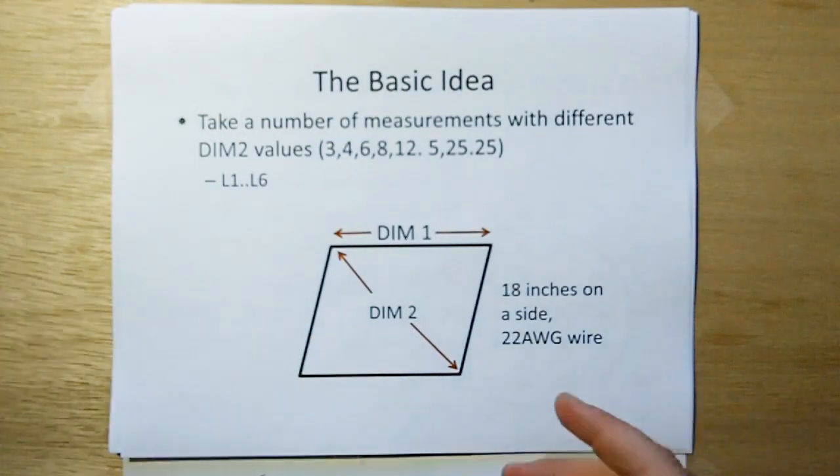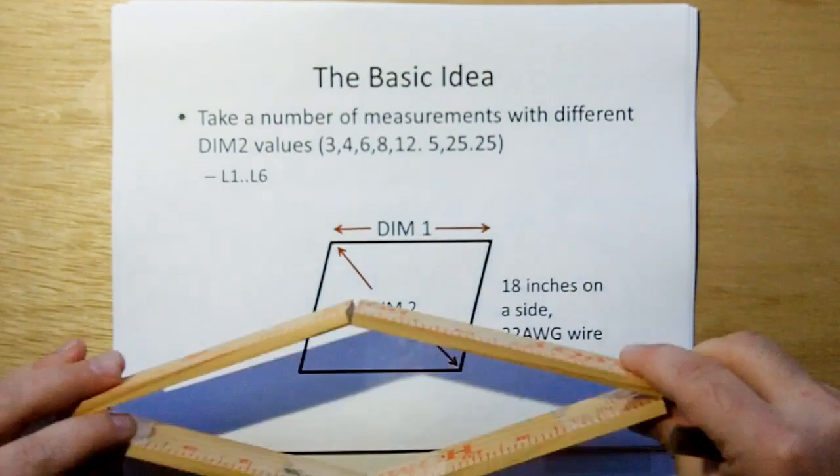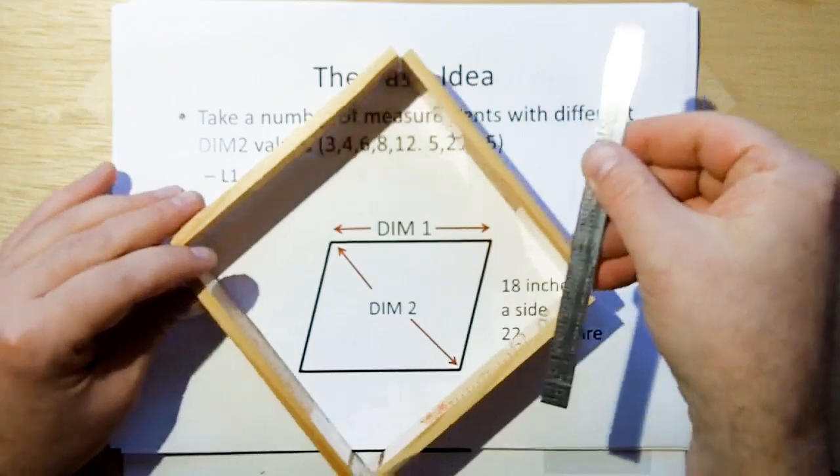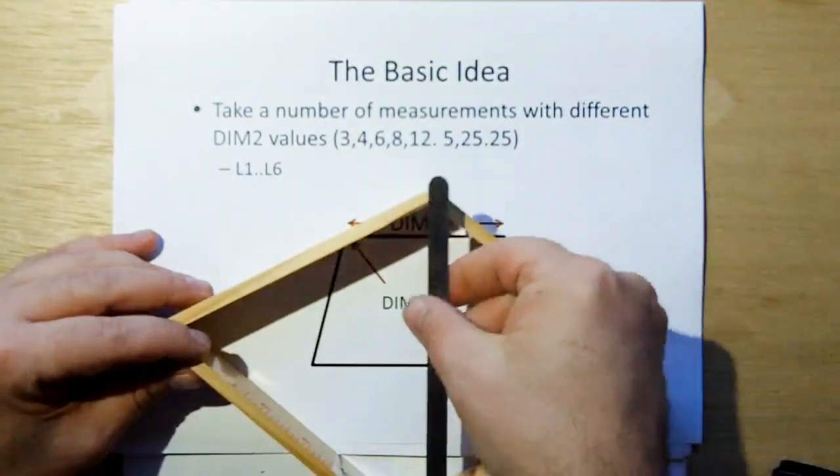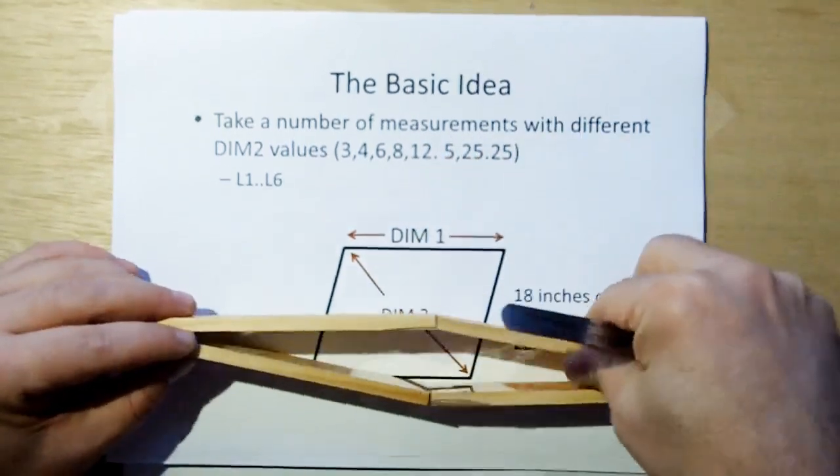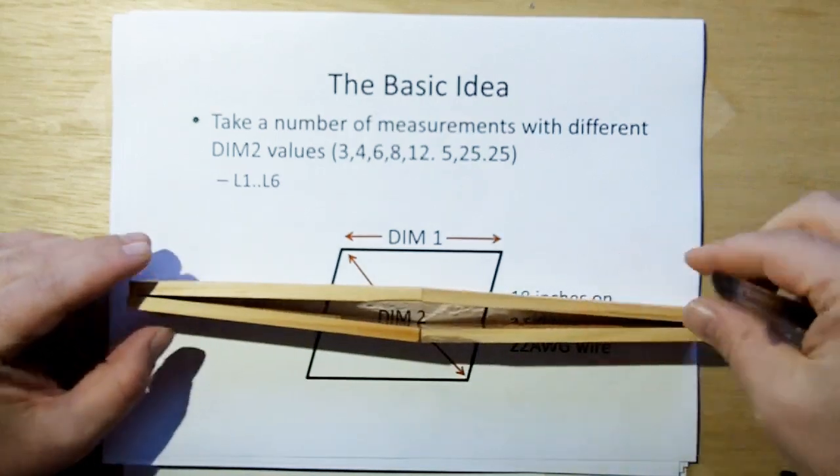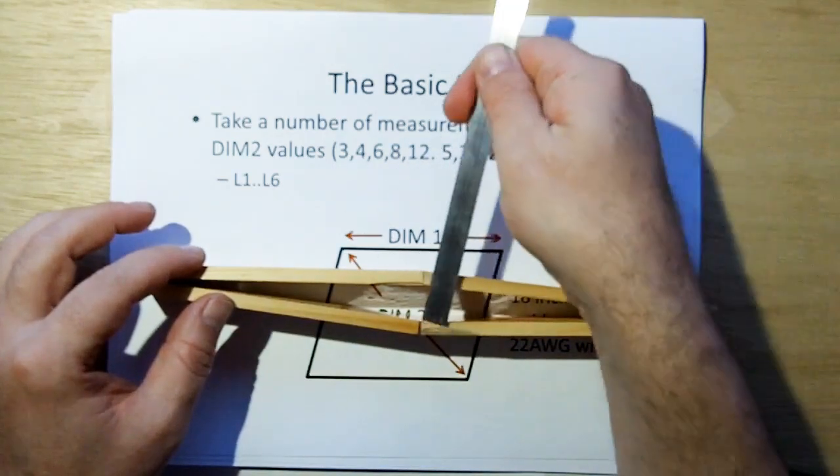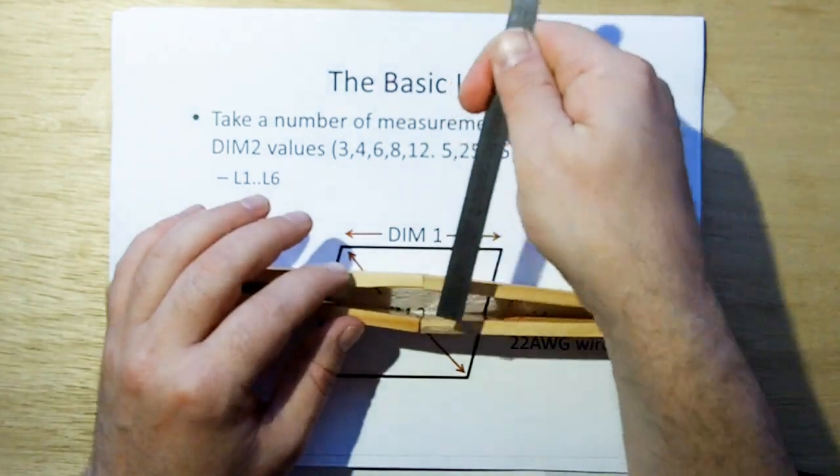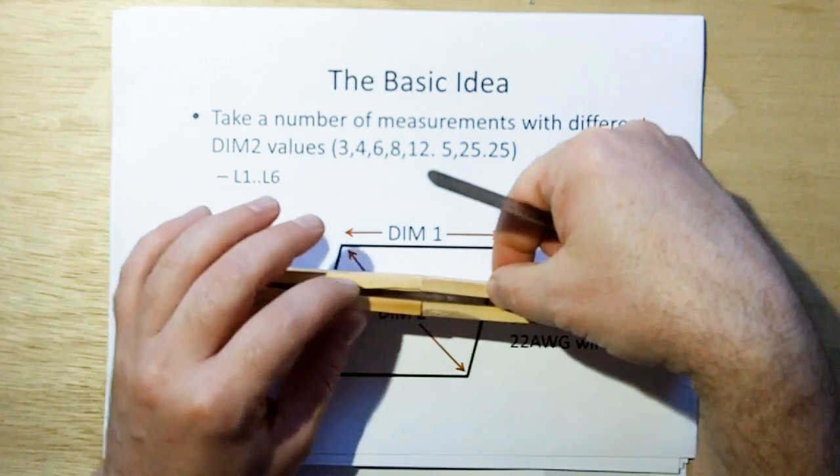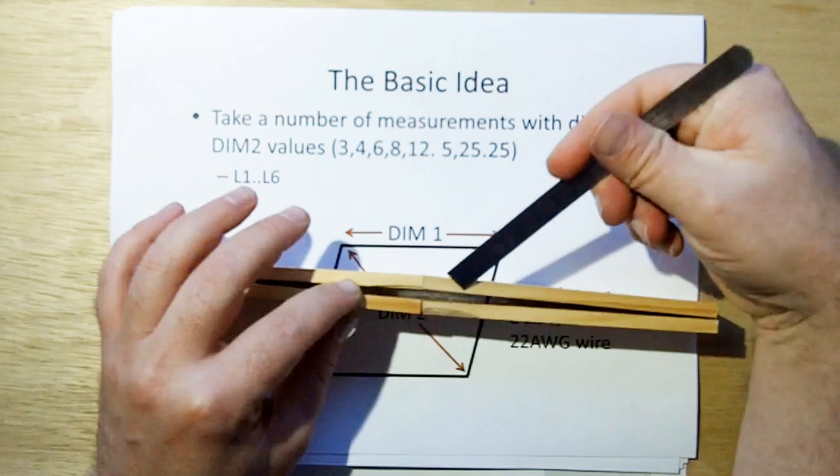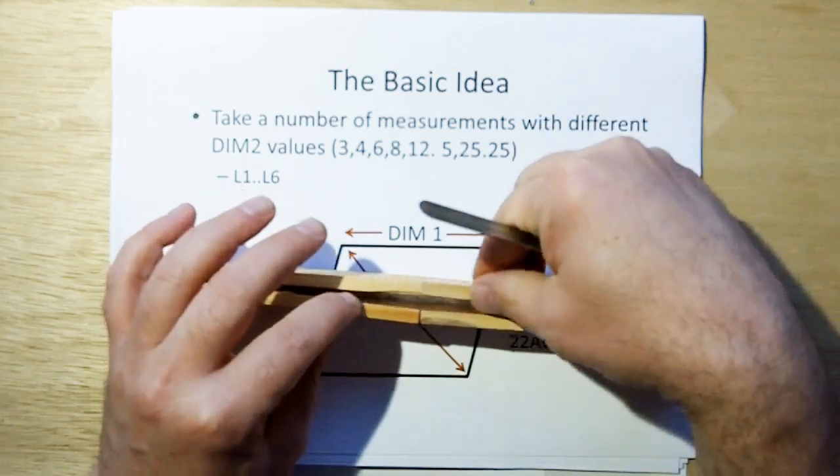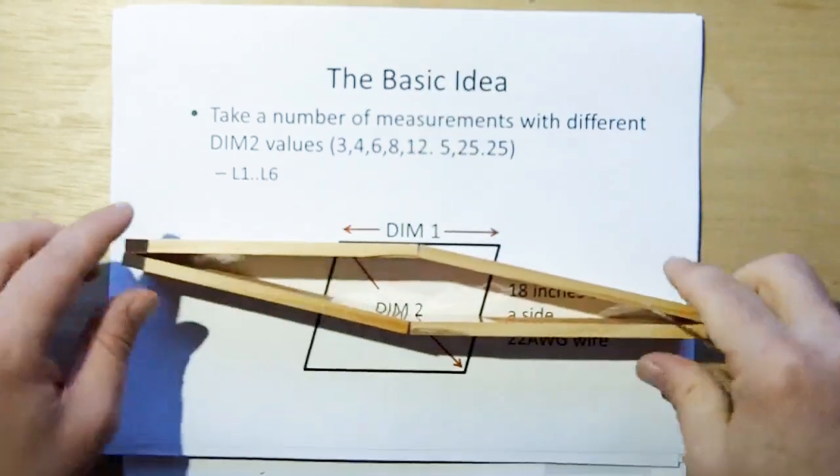So the basic idea is we're going to take a number of measurements with different values of DIM-2. DIM-1 is the length of a side, which is going to be 18 inches for our purposes. And then we're going to take different measurements, one at 25.25 inches, and then 12.5 inches. And these are pretty much arbitrary. And then 8 inches, 6, 4, and then 3 inches. You don't want to go too much narrower than that because the ability to measure accurately the distance. As the distance gets smaller, your ability to accurately measure that small distance degrades. And the effects from the other side coming close go up exponentially. So you don't want to get too close because you're going to have a lot of effects from one wire across the gap to the other that are going to be magnified as the distance goes to zero. So 3 inches across this distance here seems to be the optimal for the experiment.